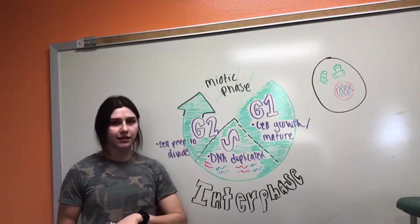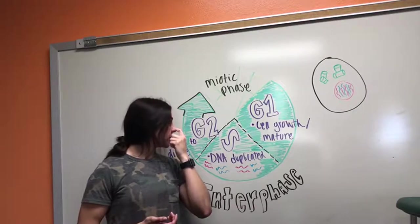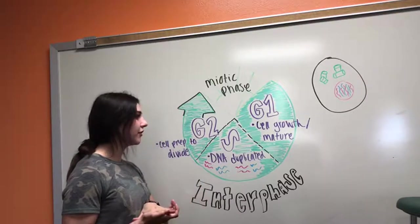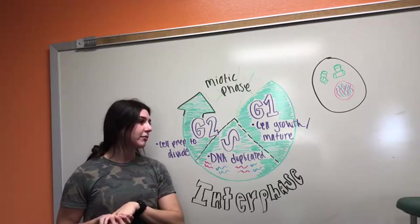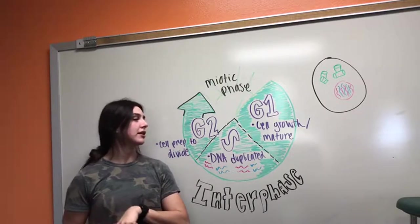Lastly, the G2 phase is the gap 2 phase. Here the cell prepares itself for the next stages, restoring energy and material necessary for the meiotic stage.